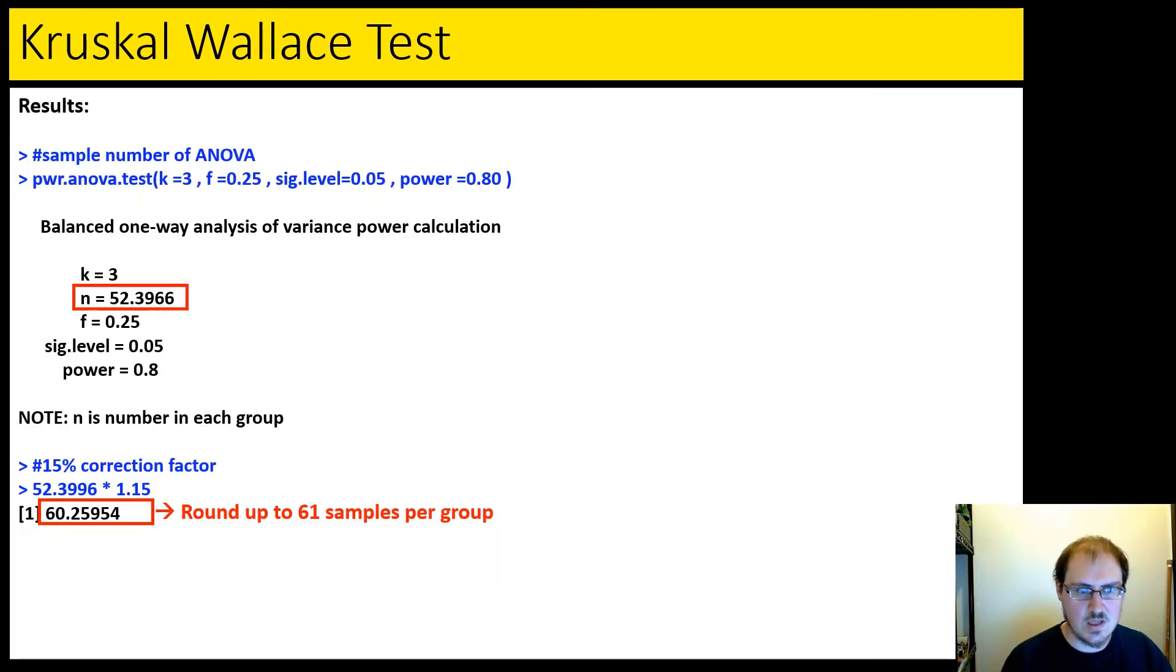Let's take a look at this in actual R. So we pulled up our test. This gives us a number of 52. And since we need to correct for it, this is the parametric. We need the non-parametric. We take 52 times 1.15. And then we're going to round up that answer of 60.2 to 61 samples. And this is, again, remember, same as ANOVA, this is per group. So 61 samples per group. Since we have three groups times three, that's going to be 183 total.